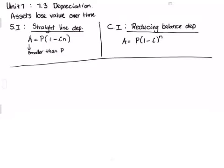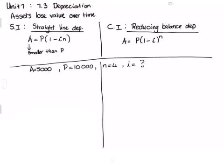Right, let's just do an example for both of them. The same example. Let's say my final amount was 5,000. My original amount was 10,000. N was 4. And my question is, what is I?